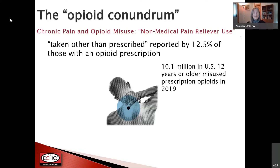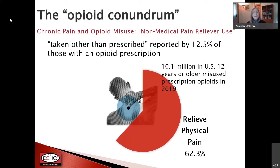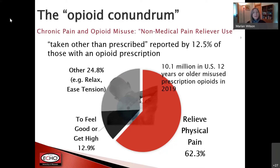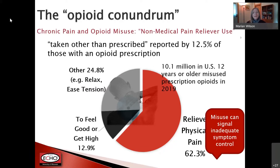Every year we check this, we still have people saying yes, they misuse their prescription opioids. When you ask them why, 62% of the time, more than half say they're doing that to relieve their pain — using opioids that are not their own or taking them other than prescribed. A smaller percentage say they're misusing to relax or ease tension, and a very small percentage say they're doing it to feel good or get high.